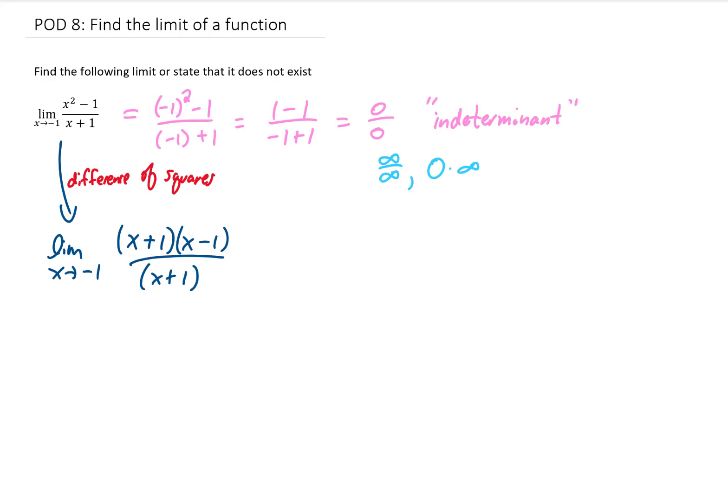But what this factoring allows us to do is it allows us to cancel the factors of x plus 1 in the numerator and the denominator, leaving us with the limit as x approaches negative 1 of x minus 1.